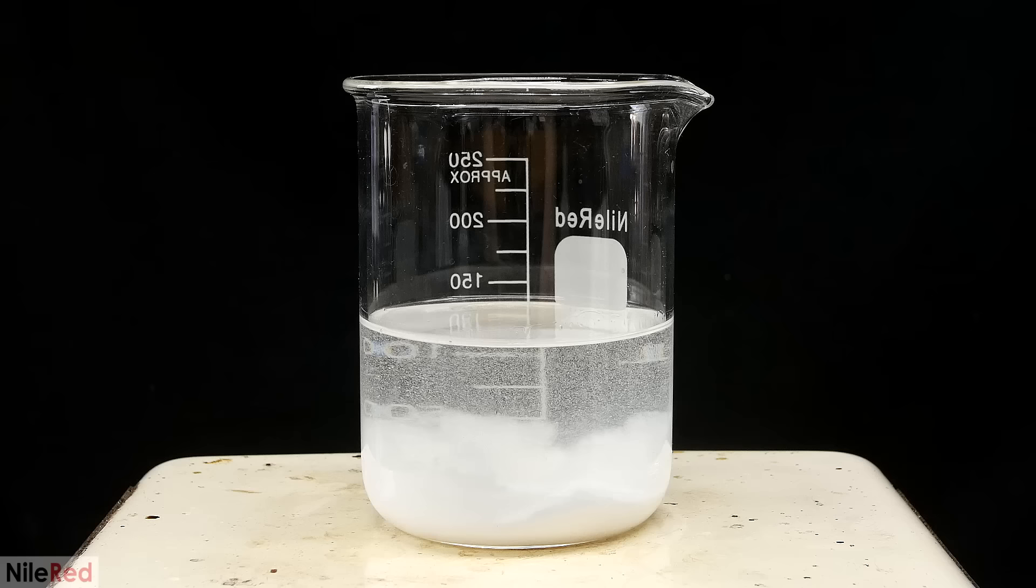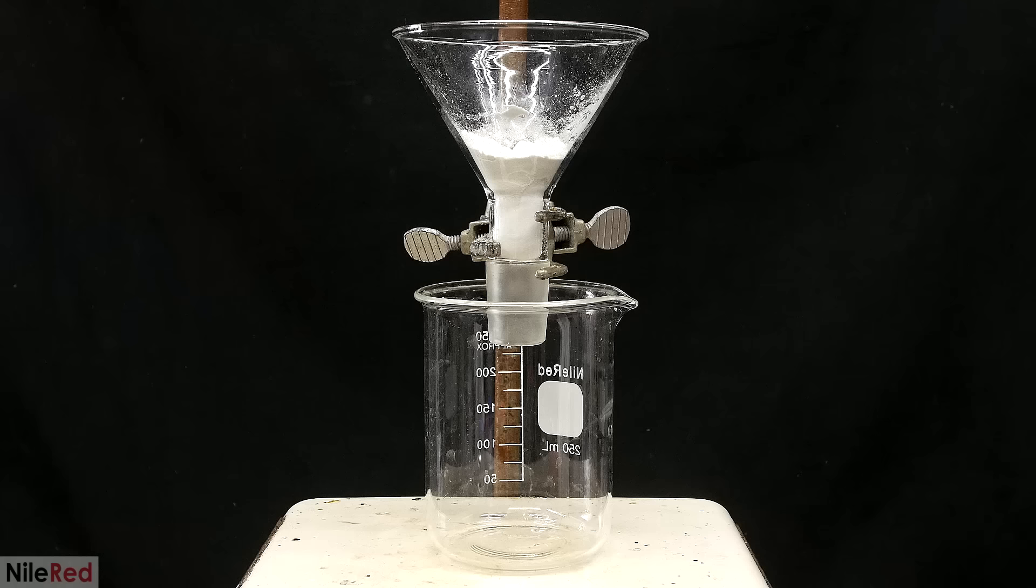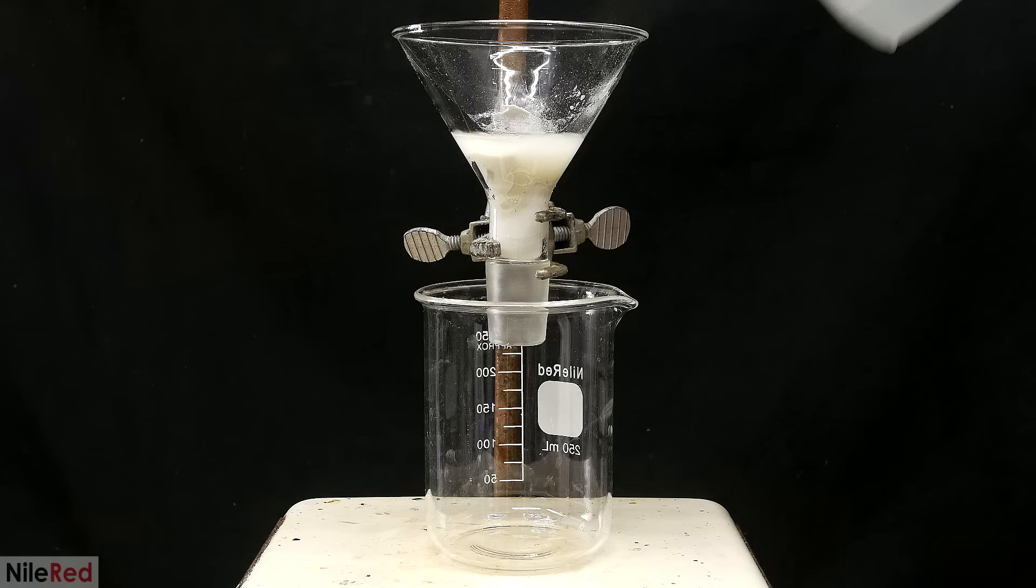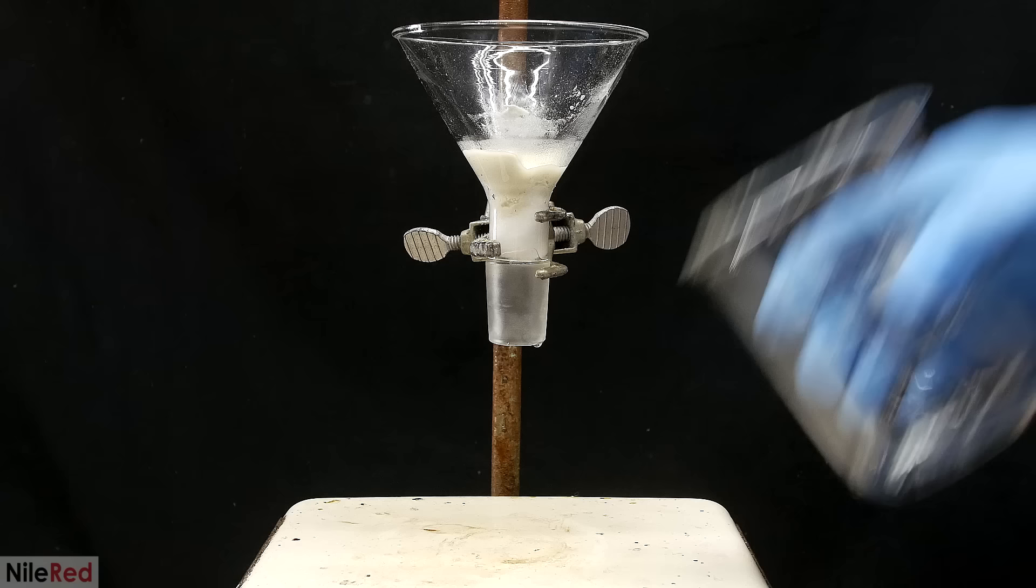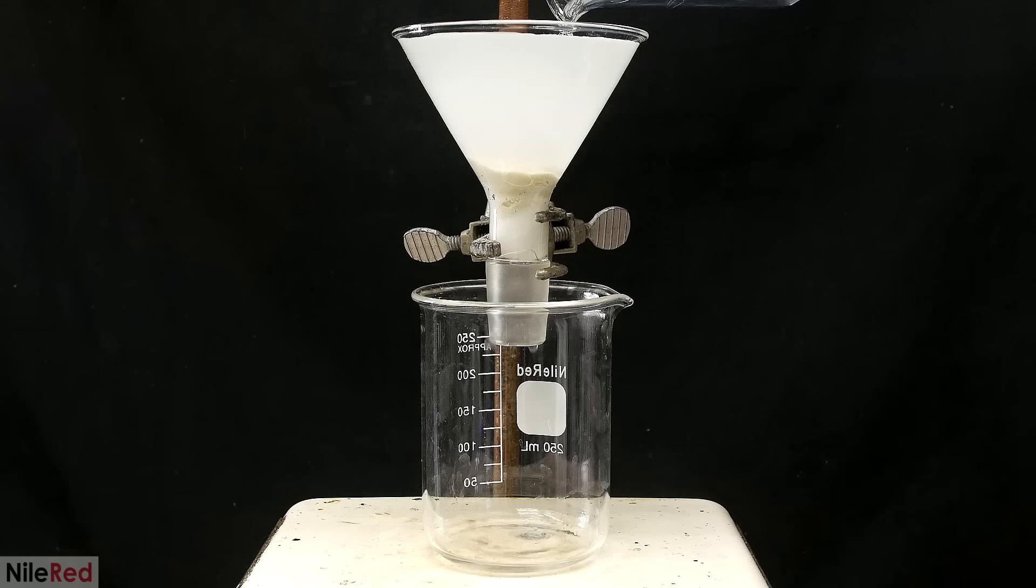It looks like everything has dissolved at this point, but it's still a little bit cloudy, so I'm gonna have to filter it. I quickly set up a glass funnel, which is plugged with some cotton and topped with celite. Before passing through my solution, I wet it with a little bit of ethanol, and then I dump out everything that passed through. Celite is especially good at filtering out small particles, so the solution that I get through is crystal clear.